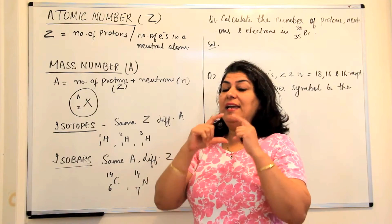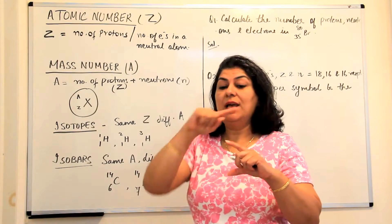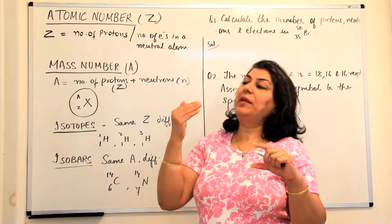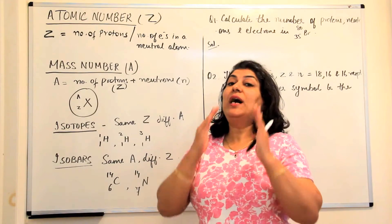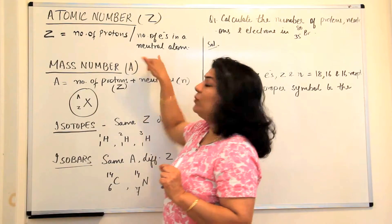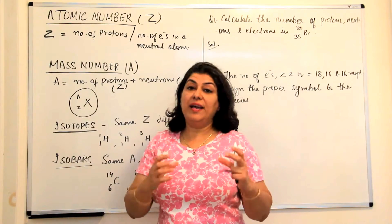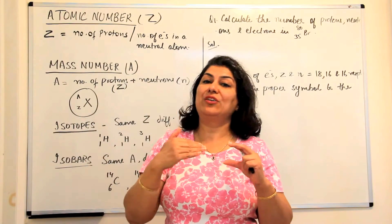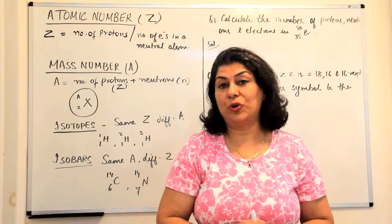The atomic number can also be equal to the number of electrons, but only if the atom is neutral. In an atom, the nucleus consists of the protons and the neutrons, but the electrons are around it, which can be lost or gained during chemical reactions. Therefore, in a neutral atom the number of protons is equal to the number of electrons, but for an ion, which is formed by either the loss or gain of electrons, the number of electrons is not equal to the number of protons.